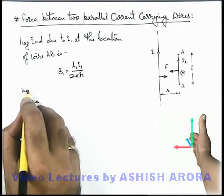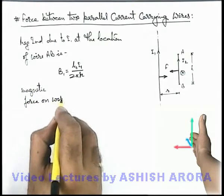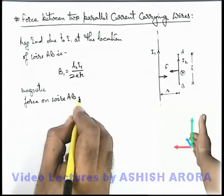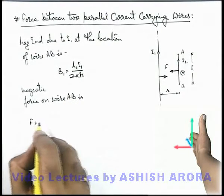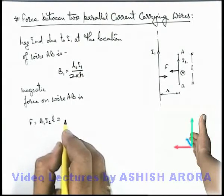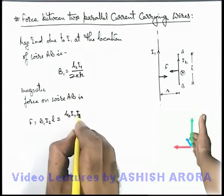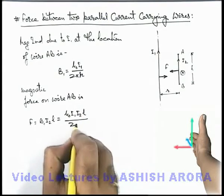So here we can write magnetic force on wire AB. This force we can write as B₁i₂l, which we already studied, which is given by BIl. So if we substitute the values, this is μ₀i₁i₂l divided by 2πr.